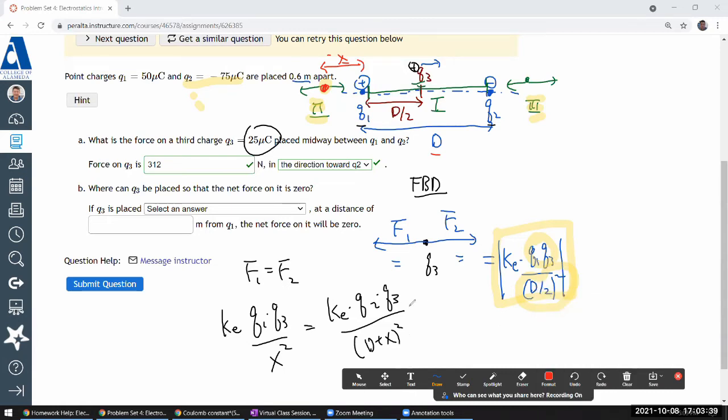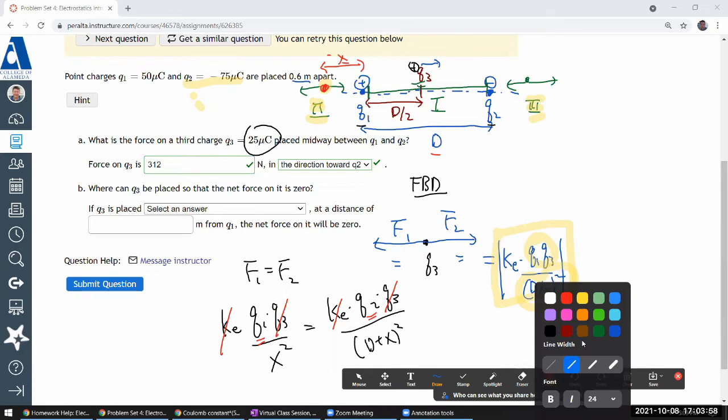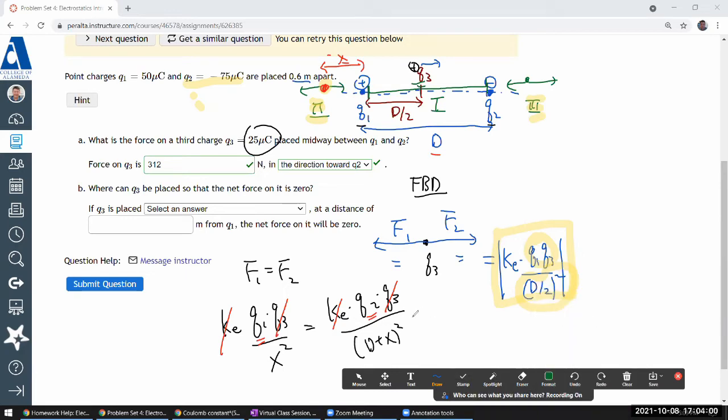Okay, so let me cancel out some stuff that cancel out. So I don't have to, canceling it all. Q3 is cancel. Coulomb's constant cancel. So you do have Q1 and Q2 remaining. And let me try to work this out a little bit.